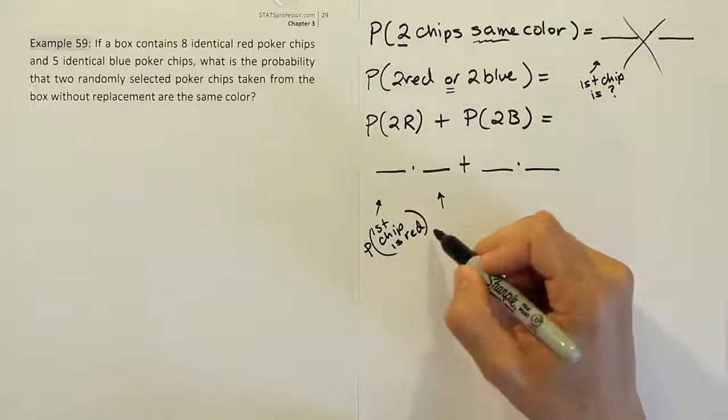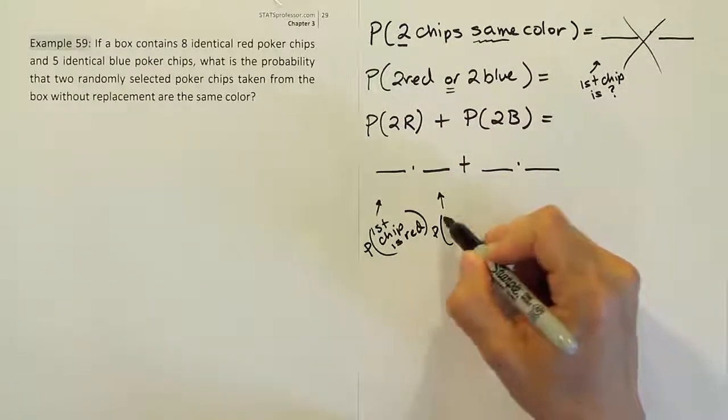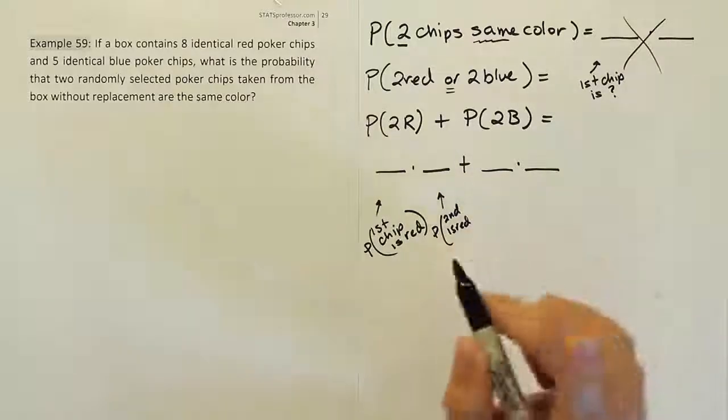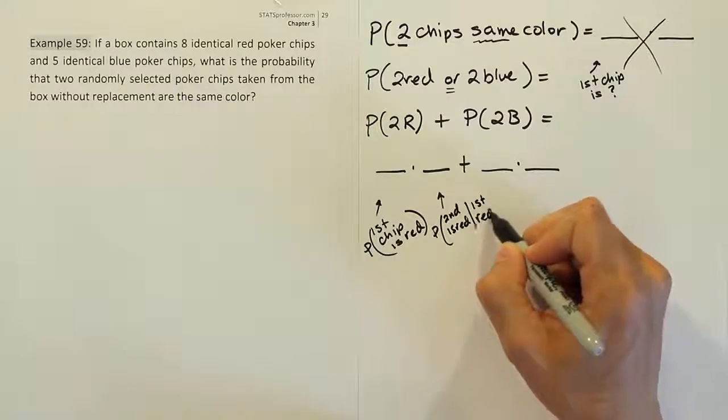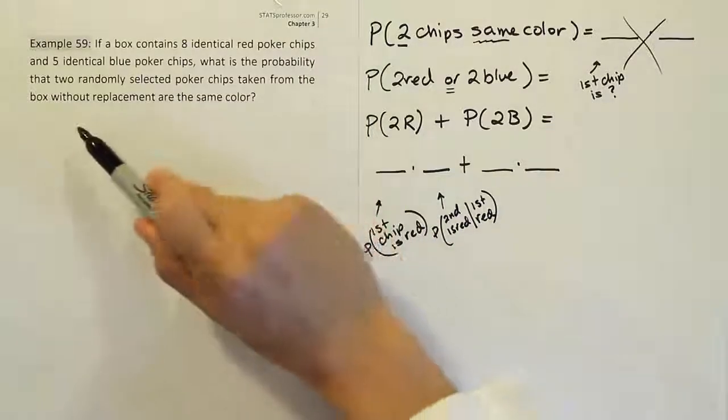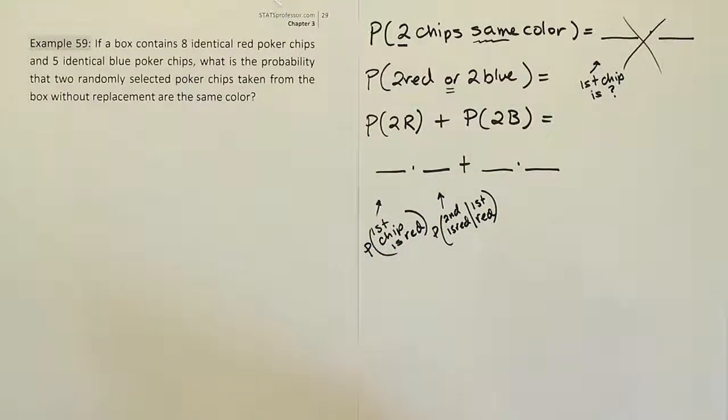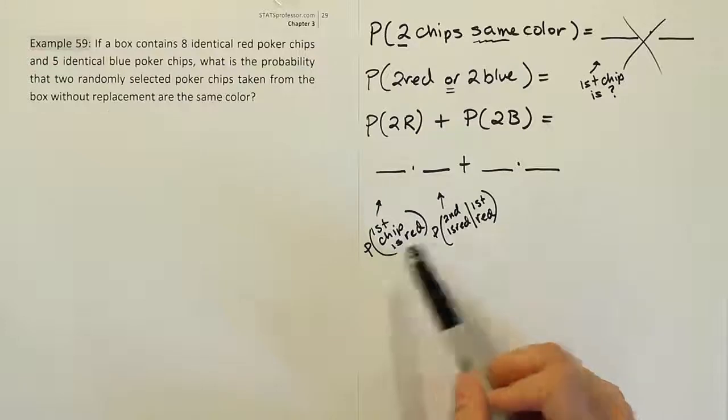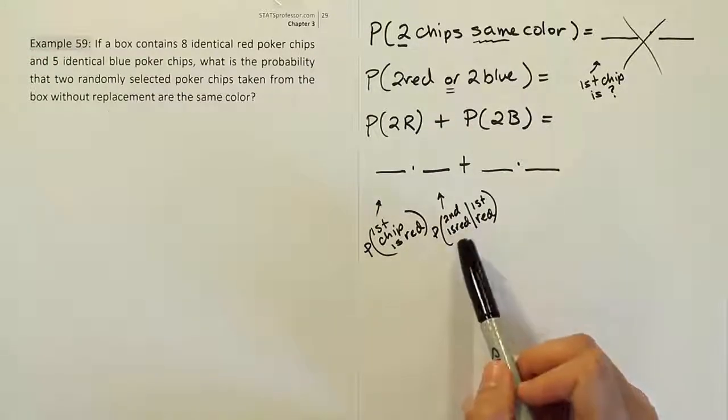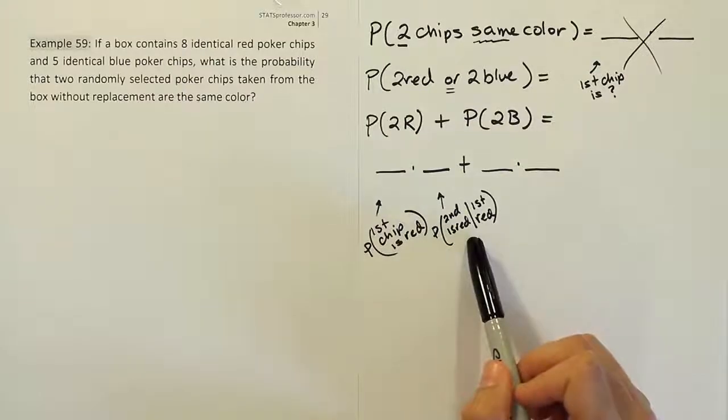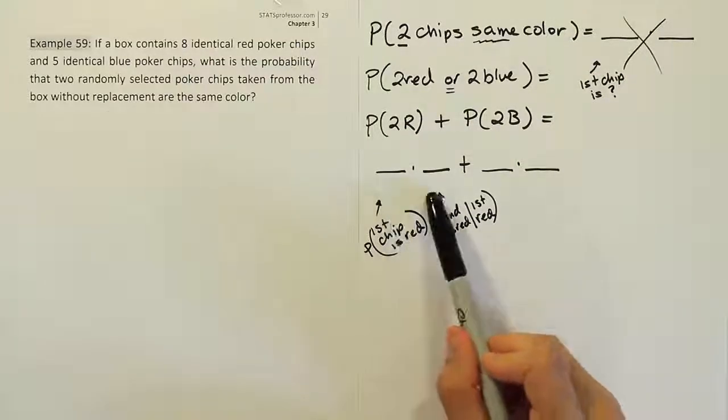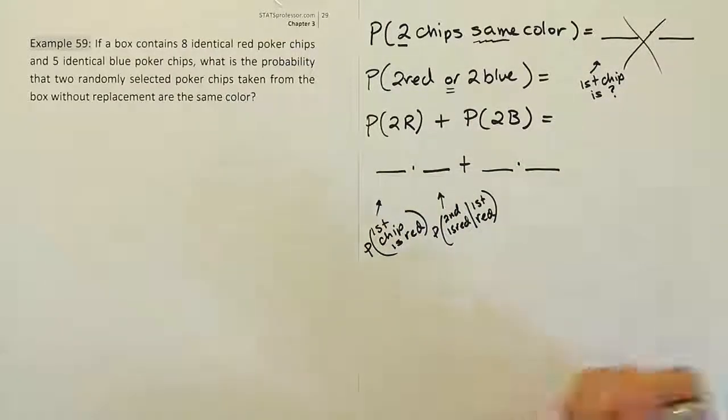What's the second space going to represent? That would be the probability that the second is red. Be careful though, given that the first is red, because it says we're sampling without replacement. In other words I'm going to put that chip aside, I'm not going to put it back in the box. So if the first chip I took out was red I'll have less red chips in the box and less total chips. So I'll need to think about that. But still that's doable. That's just a dependent case, and we'll just reduce the fraction accordingly.